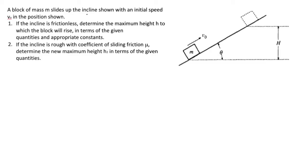A block of mass m slides up the incline shown with an initial speed v0 in the position shown. If the incline is frictionless, determine the maximum height h to which the block will rise in terms of the given quantities and appropriate constants.